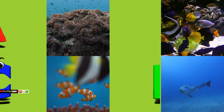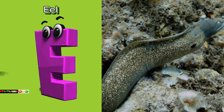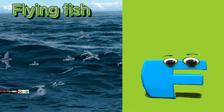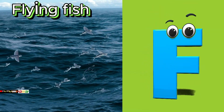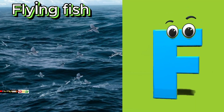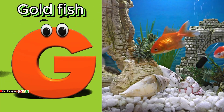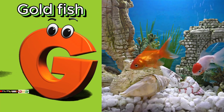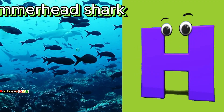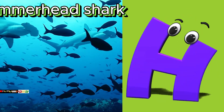E is for eel. Eh, eh, eel. F is for flying fish. Fuh, fuh, flying fish. G is for goldfish. Guh, guh, goldfish. H is for hammerhead shark. Ha, ha, hammerhead shark.